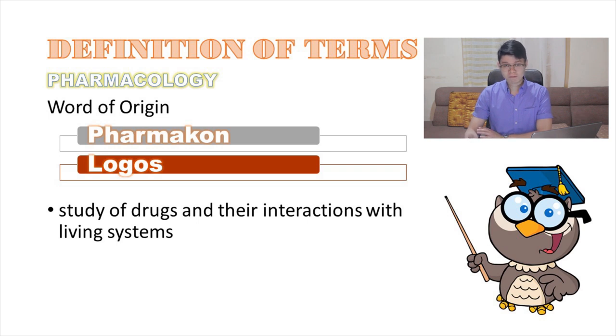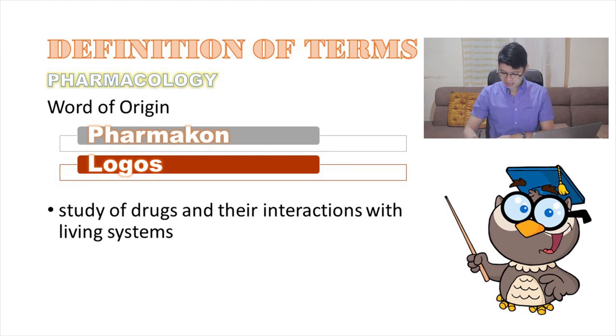This will encompass all the physical and chemical properties of drugs as well as their biochemical and physiologic effects to our body. This will include the knowledge of history, sources, as well as uses of drugs, where we will be tackling and expounding our knowledge in terms of drug absorption, distribution, metabolism, as well as excretion.